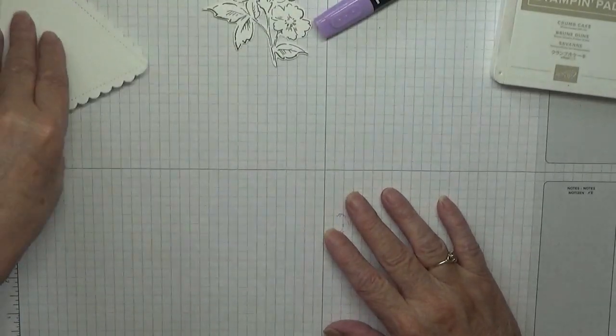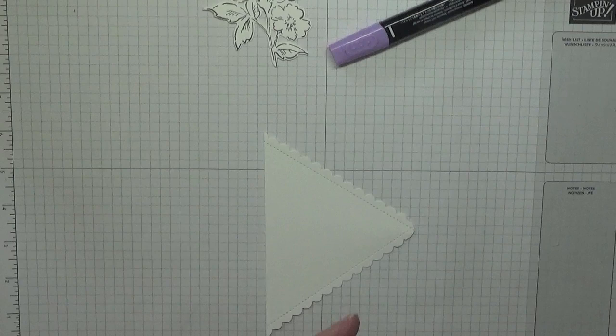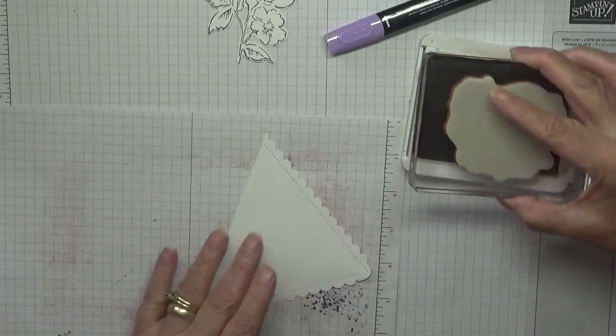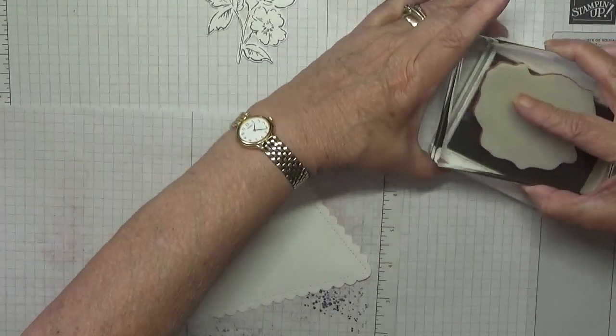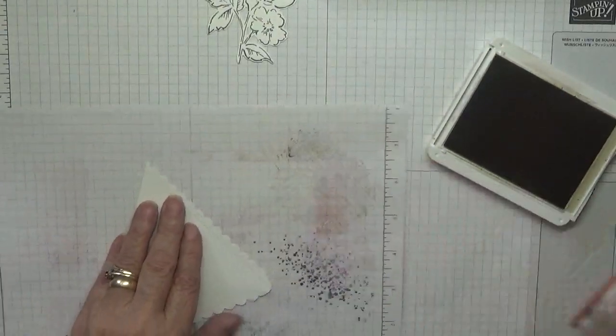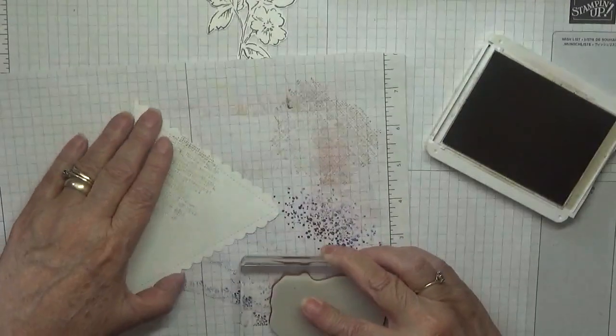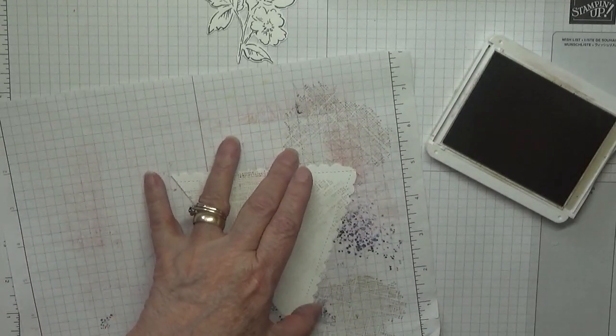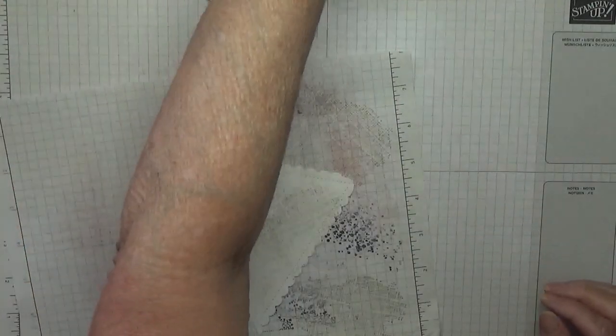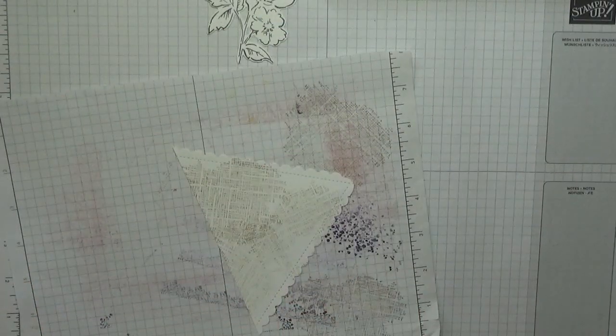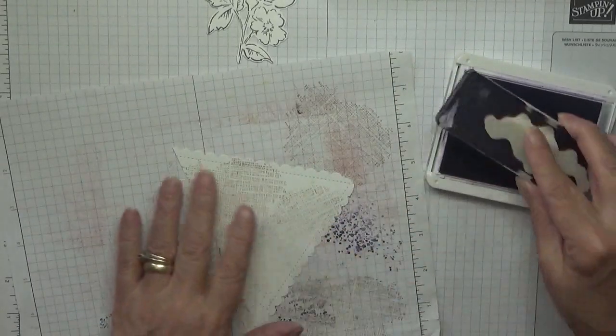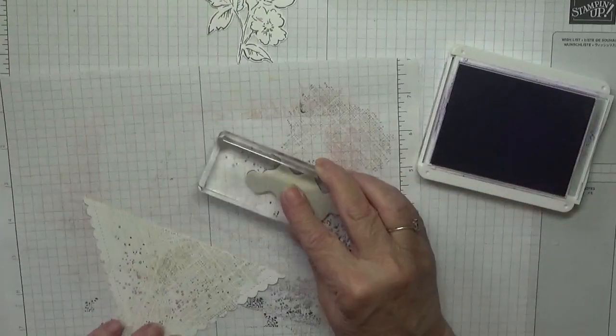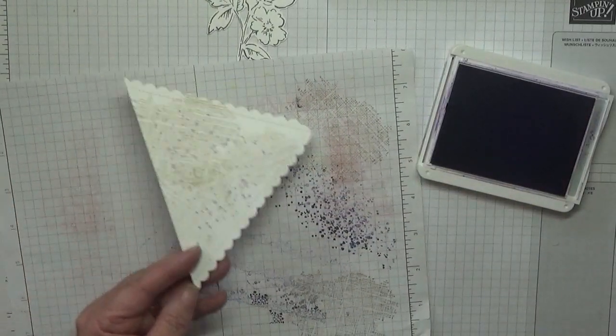Right, that is that cut out and we should color that in afterwards. Now then, let's get this done. Crumb cake, ink that up. That is our background in crumb cake. And then I've got Highland Heather because we're going to color our flower in Highland Heather. And with the dots, again stamped off, all I did was put around the edges like that. And that's our background.